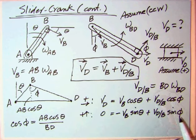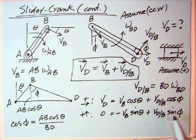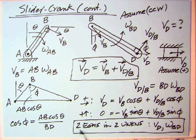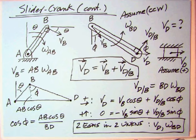Our VD relative to B term, which is equal to BD times omega BD, cosine phi to the right, sine phi up. Essentially what you have is two equations and two unknowns, the velocity at D and the angular velocity of the connecting rod BD. You could just write these equations, put them somewhere. This solves all slider crank problems.